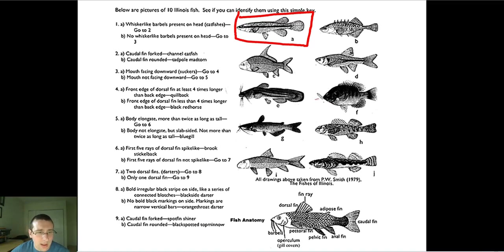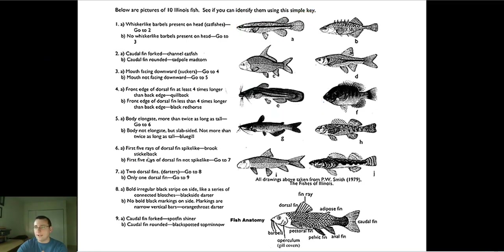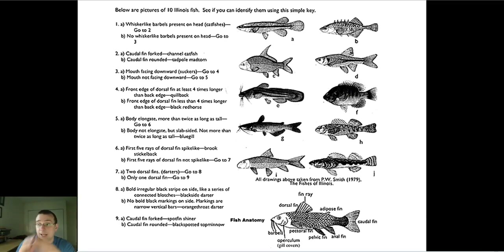Let's look at a second fish. Does it have whisker-like barbels on the head? Yes, it does — so it must be a catfish, and I go to two. Is the caudal fin forked or rounded? It's rounded, so it's a madtom catfish. You use the key to help you identify the type of fish. If you do it correctly, you can find out what all these fish are, and a worksheet on the website lets you practice. If you can't classify two of the fish, you re-examine and correct the problem.